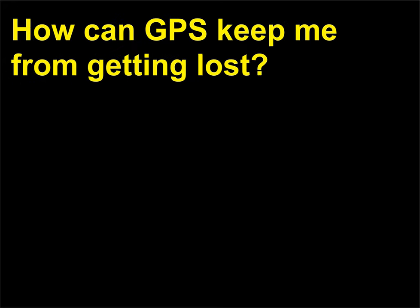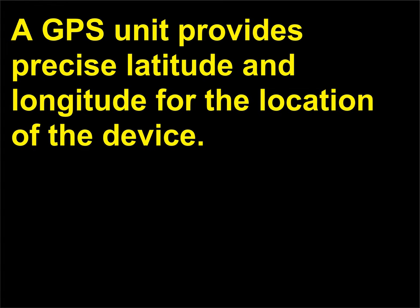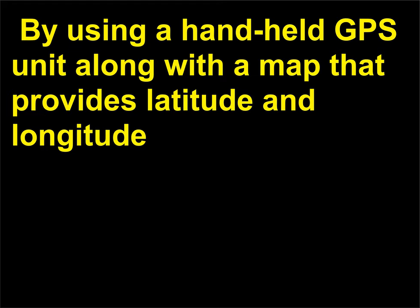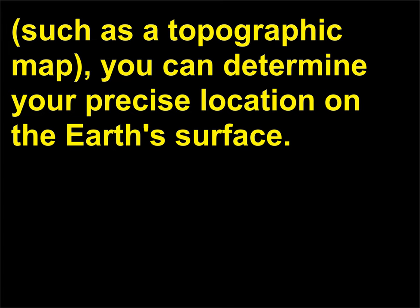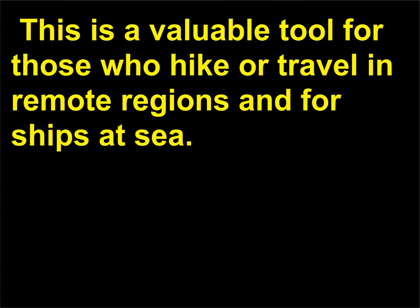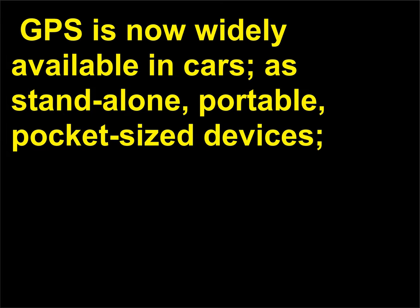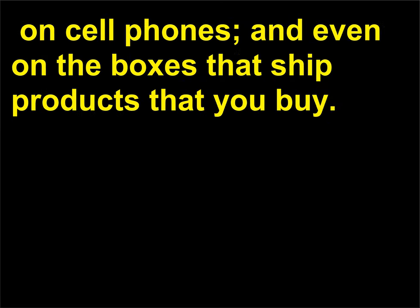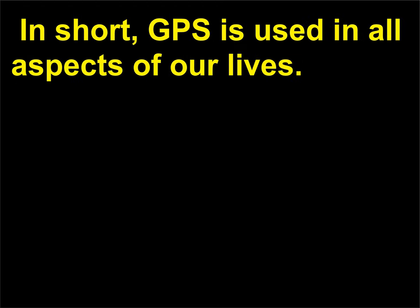How can GPS keep me from getting lost? A GPS unit provides precise latitude and longitude for the location of the device. By using a handheld GPS unit along with a map that provides latitude and longitude, such as a topographic map, you can determine your precise location on the Earth's surface. This is a valuable tool for those who hike or travel in remote regions and for ships at sea. GPS is now widely available in cars, as standalone portable pocket-sized devices, on cell phones, and even on the boxes that ship products that you buy. In short, GPS is used in all aspects of our lives.